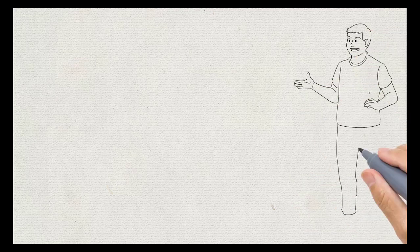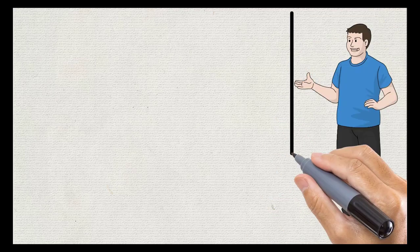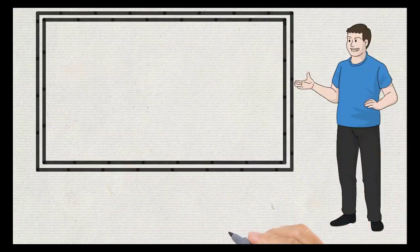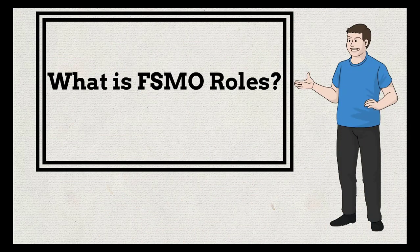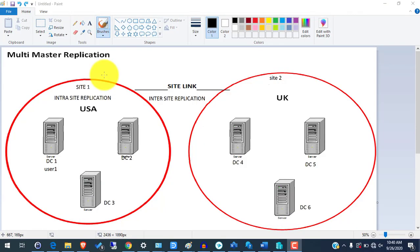Hi guys, welcome to iNetwork365. In this video I will explain what FSMO roles are. Before I explain FSMO, I need to explain something called multi-master application. Here you can see there are two sites: site 1 is in USA and site 2 is in UK. In between them they are connected through the internet, which is called a site link.